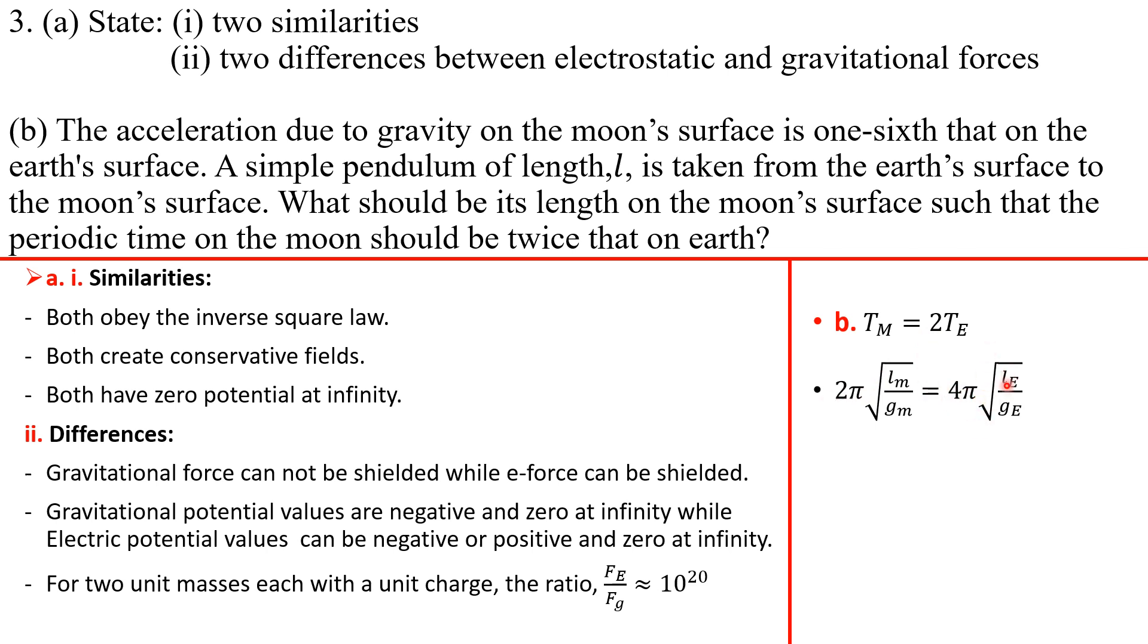We can simplify. Square both sides. This 2π goes with this 2π, so I'm left with 2. If I square both sides, I'm simply going to be left with lm/gm equals 2 squared, which gives us 4, so 4le/ge. What is our lm? lm is 4l.